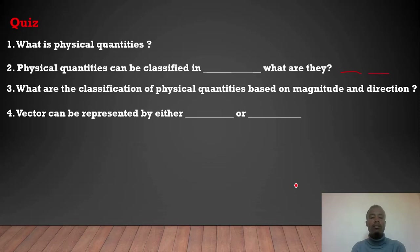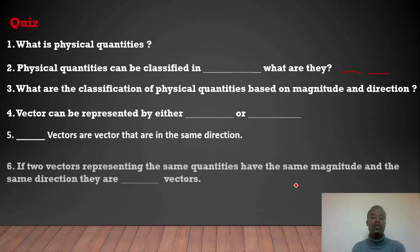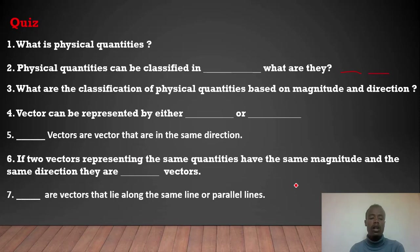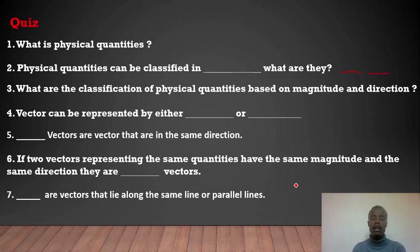A vector can be represented by either blank or — question for students. Blank vectors are vectors that are in the same direction. If two vectors representing the same quantity have the same magnitude and the same direction, they are blank vectors. Blank vectors are vectors along the same line or parallel lines.